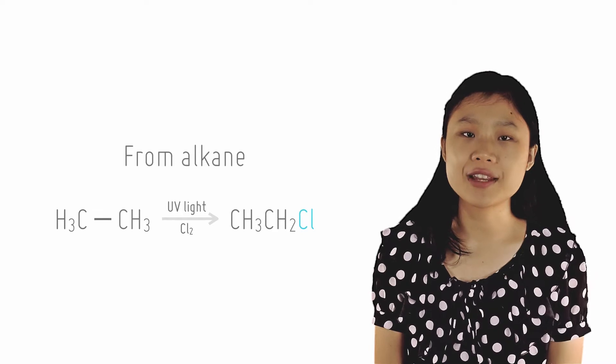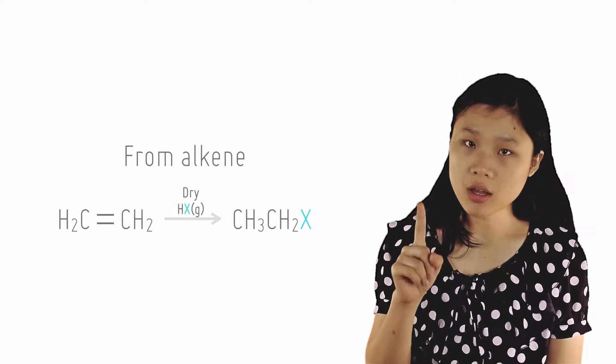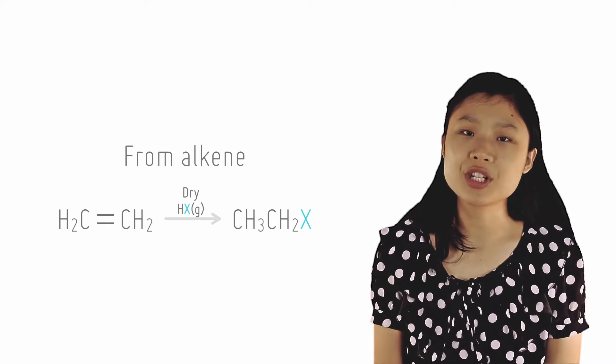Alkenes can undergo electrophilic addition to form halogeno alkanes with either one or two halogen atoms added depending on the reagents used.